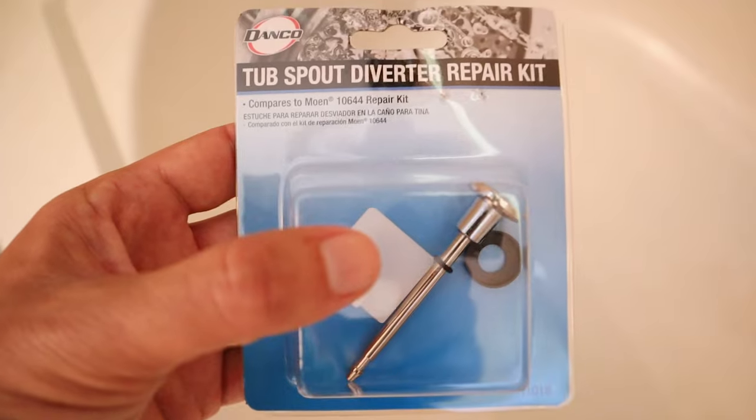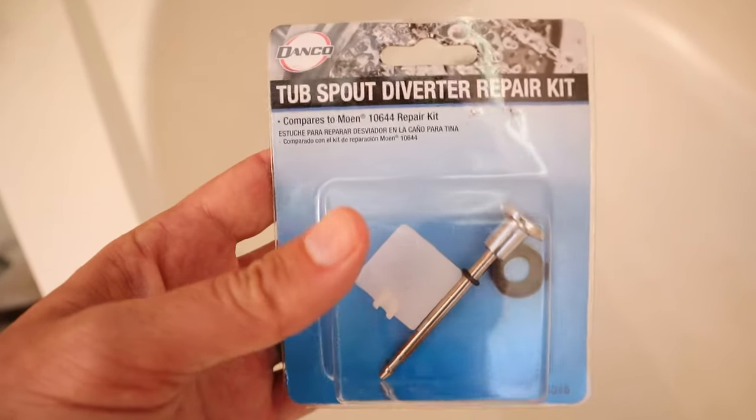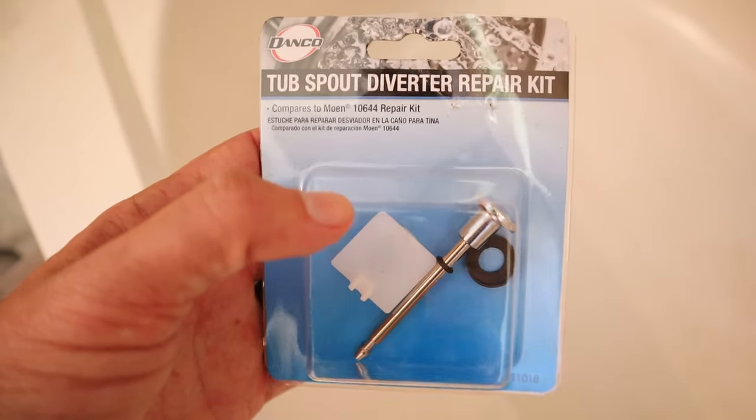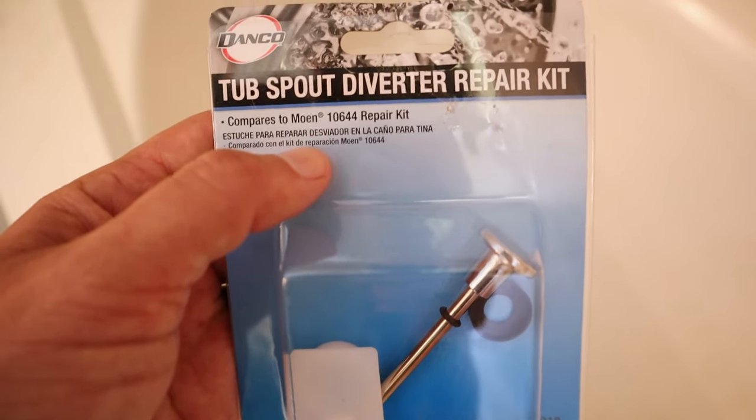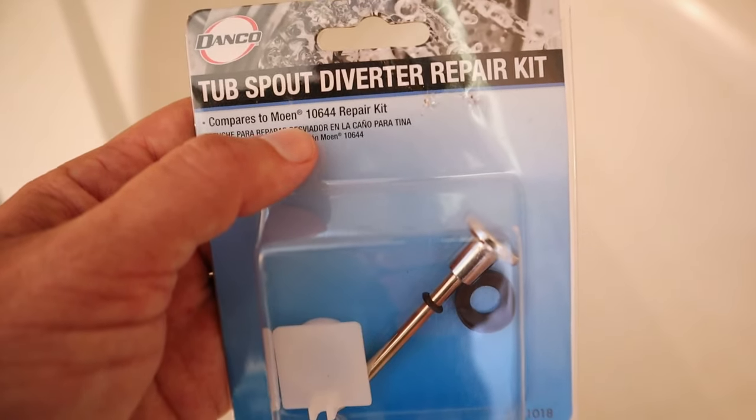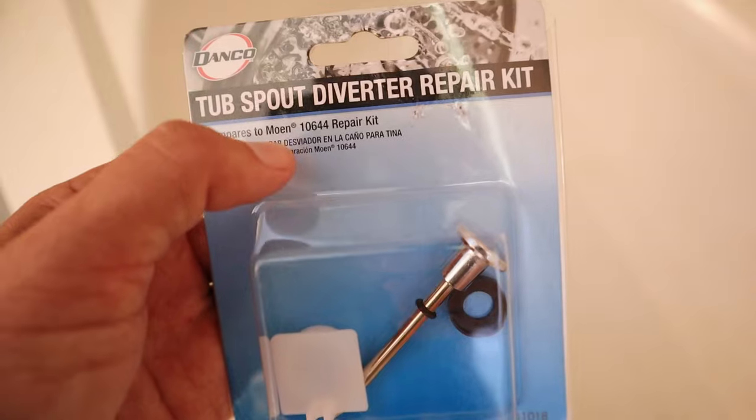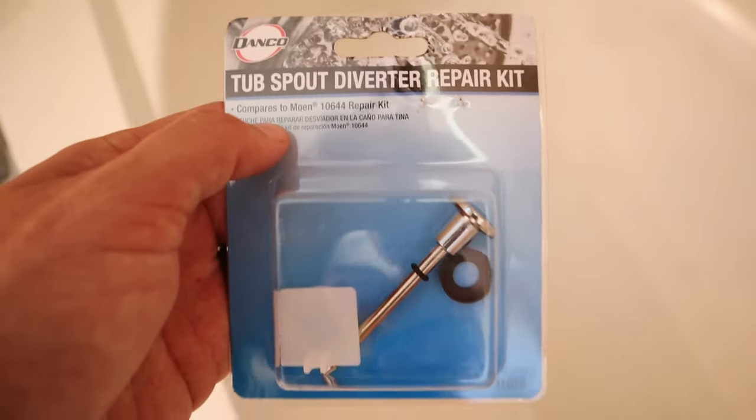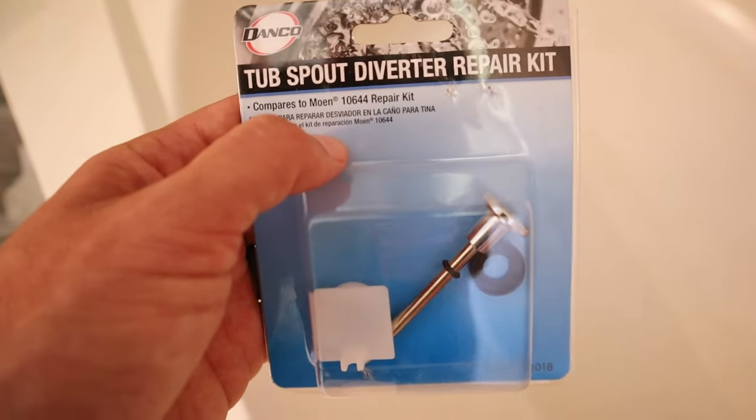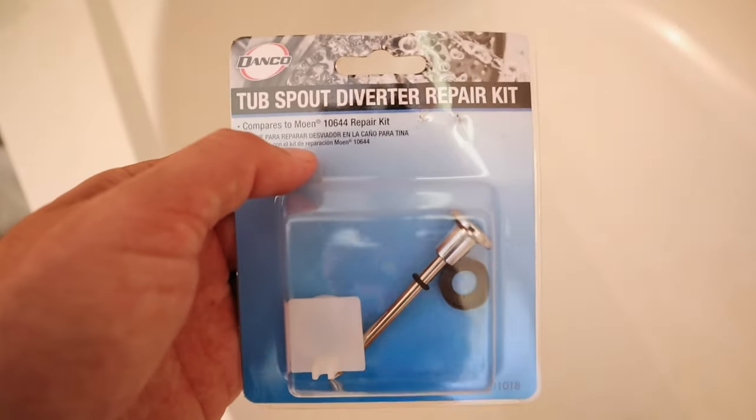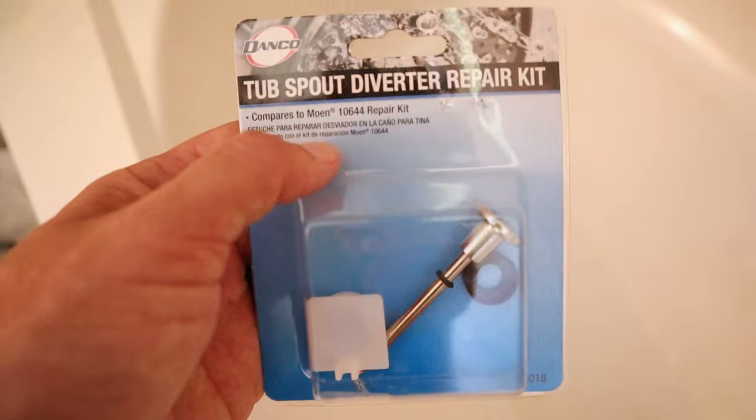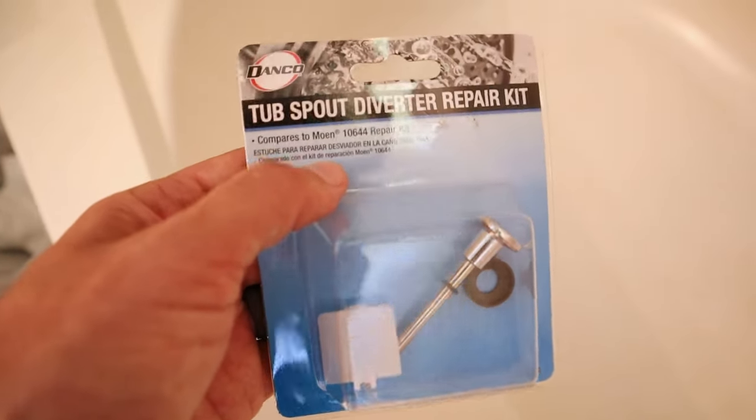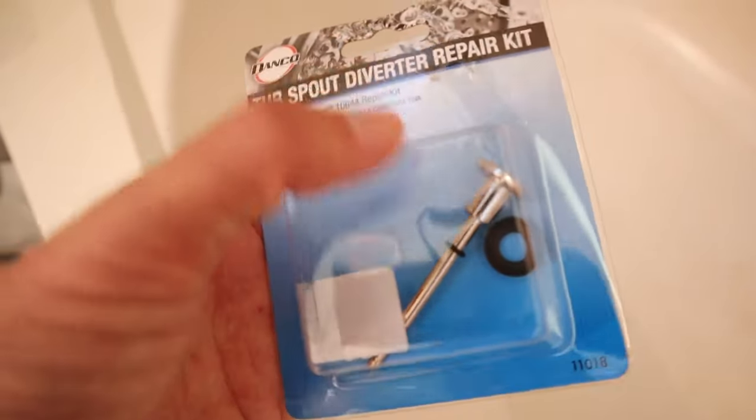So in order to fix this, instead of replacing the entire spout, I picked up this repair kit. This is made by Danco. And this particular repair kit is made specifically for the Moen spouts, but they do have some generic ones that can fit most tub spouts. And of course, you're going to need to find the one that will fit your particular spout. But in this case, this is a Moen, so I picked up one of these Moen diverter repair kits, and it should fit it the way that I want.